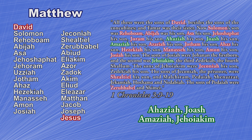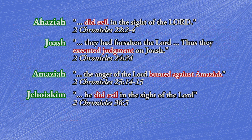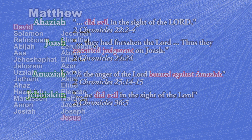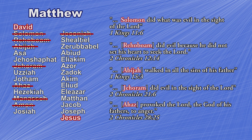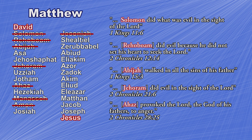Why is Matthew skipping names? One apologetic is that these men were evil kings, and so their names were blotted out. A problem with this is that many kings remaining on Matthew's list were also considered evil. In fact, two missing names — Joash and Amaziah — were actually good kings to begin with, but later turned away from God like King Solomon, whereas many other kings listed by Matthew were described as evil right from the beginning.